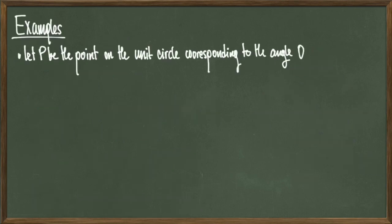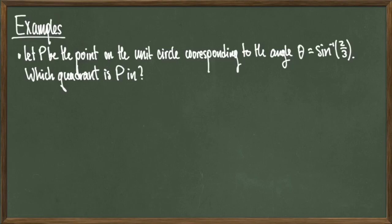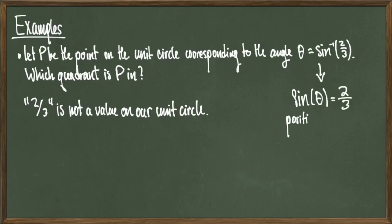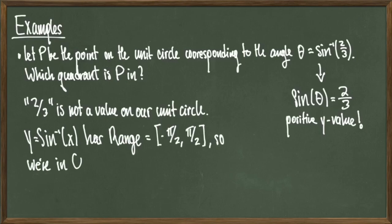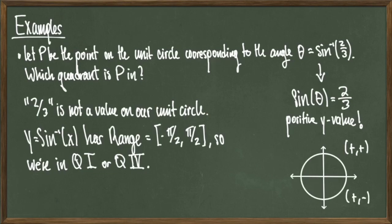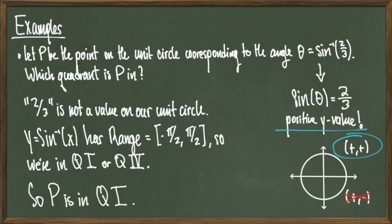In this next example, let p be a point on the unit circle corresponding to the angle theta equals sine inverse of 2 over 3. What quadrant is point p in? Since 2 over 3 is not a common unit circle value, we do some detective work. If theta equals sine inverse of 2 over 3, then sine of theta equals 2 over 3, which is a positive y value. Sine inverse outputs angles in quadrants 1 and 4. In quadrant 1 the y values are positive, and in quadrant 4 they are negative. Since sine of theta is positive, point p must be in the first quadrant.